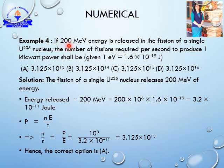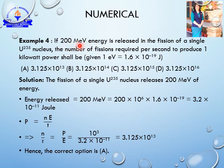Example number 4: if 200 million electron volts of energy is released in the fission of a single uranium-235 nucleus, the number of fissions required per second to produce 1 kilowatt of power shall be A, B, C, or D. Given: 1 electron volt = 1.6 × 10⁻¹⁹ joules. We use this to convert the energy of fission of a single uranium nucleus — which releases 200 million electron volts — into joules.